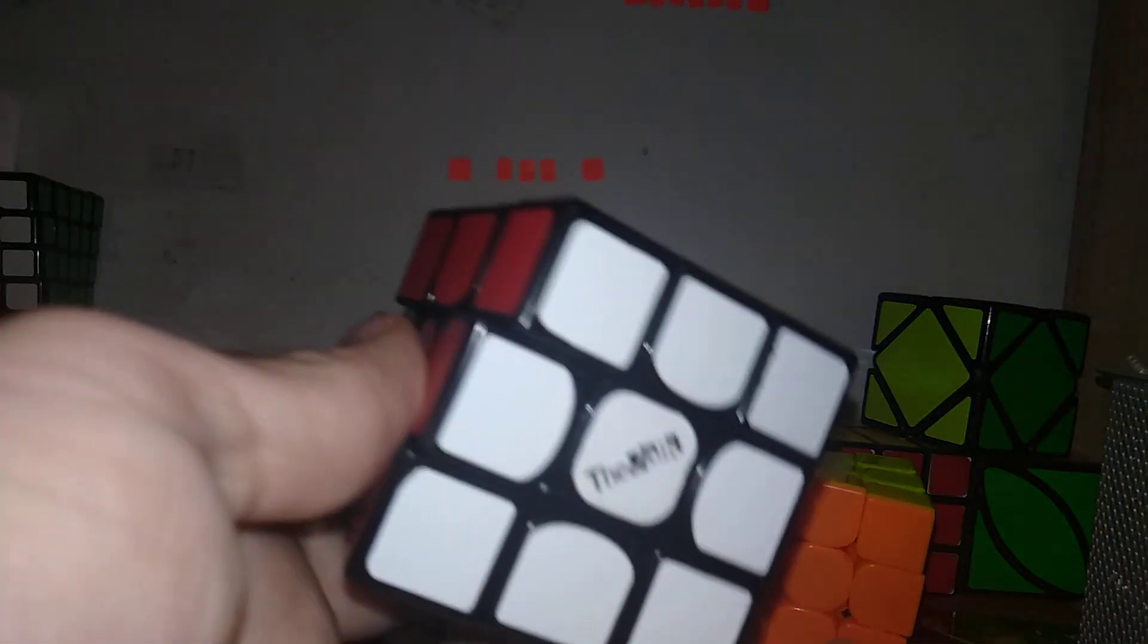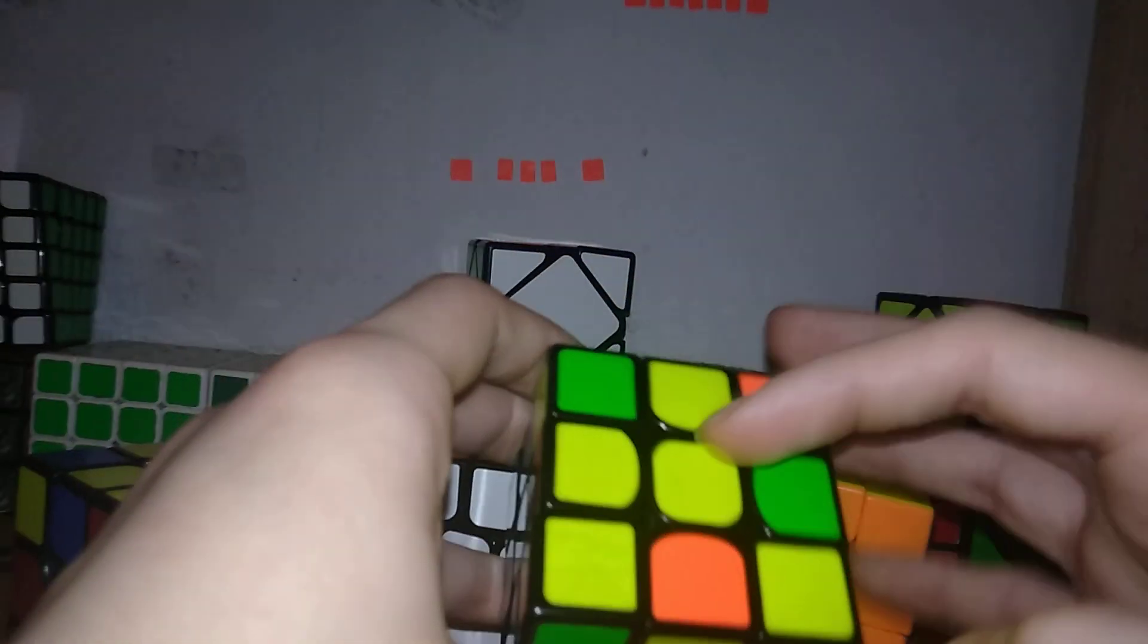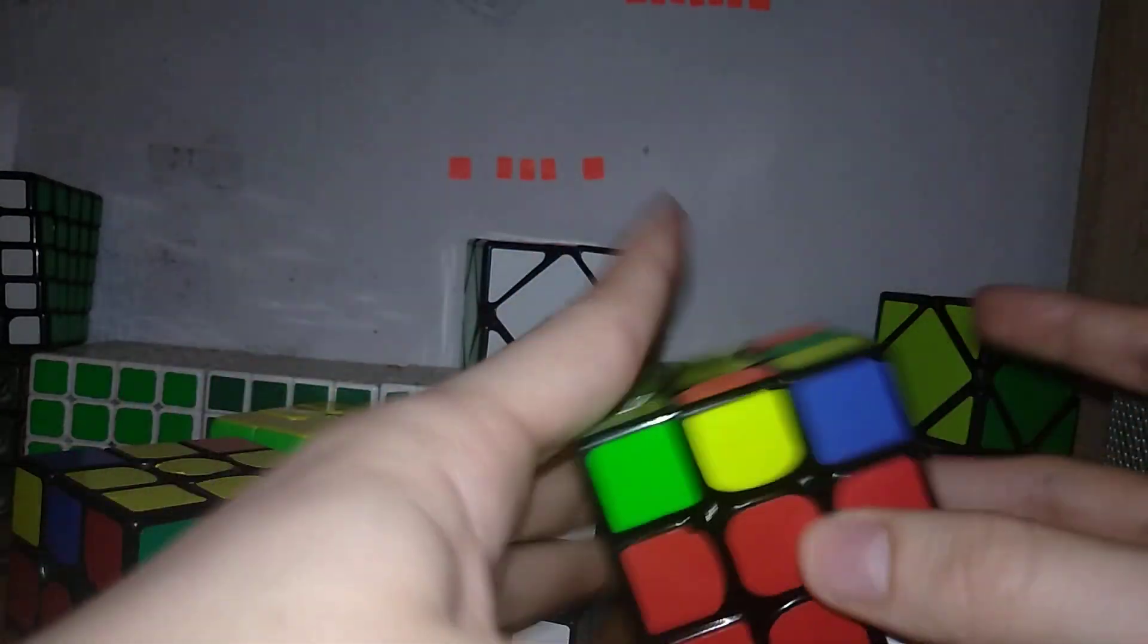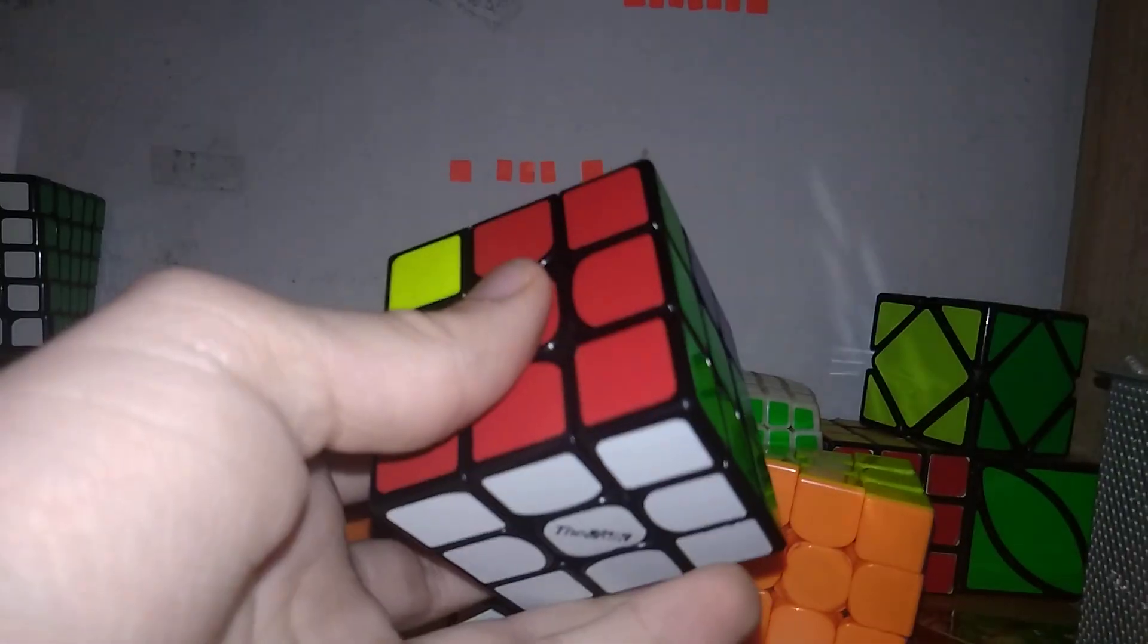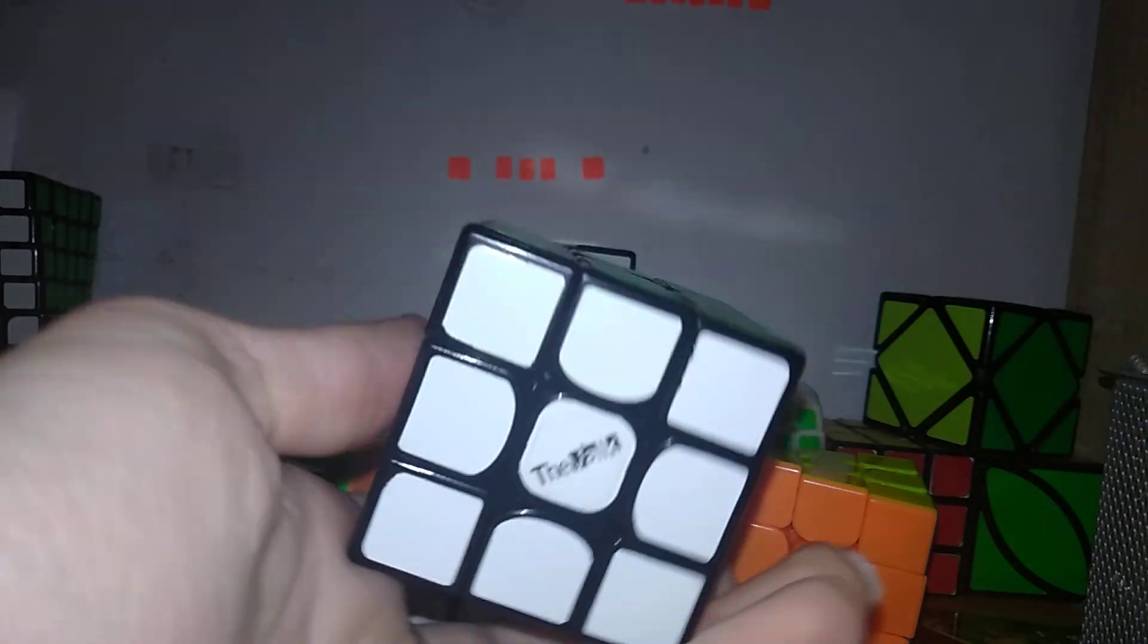When all edges are oriented well you can obviously just take the pair and solve it two-gen, you can do CLS. ZBLL is fun.